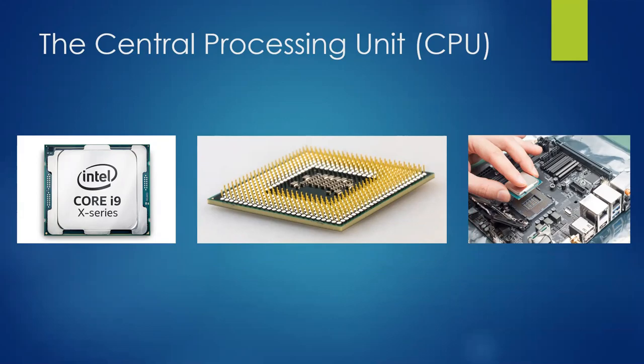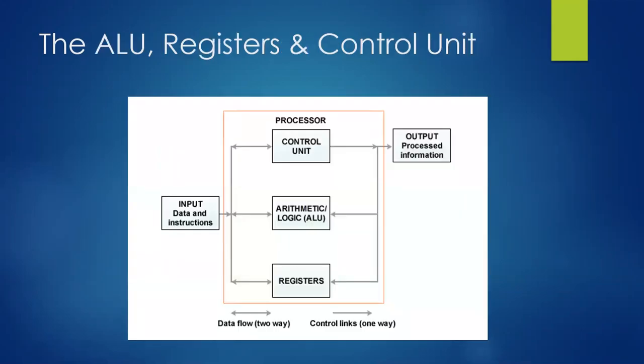So there's three areas of the CPU that we need to delve into a bit more detail, and this picture here shows that for us. If you look at just the processor in the middle there, you'll see the control unit, the arithmetic and logic unit, and the registers. That's the three areas we're going to have a look at today.